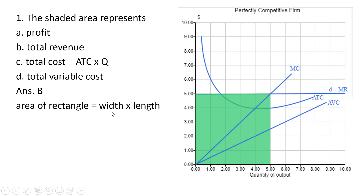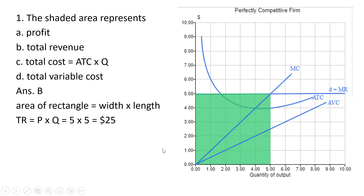The area of a rectangle is given by width times length. The width here is five dollars, which is the price, and the length here is the quantity of units, which is five. So five times five would be twenty-five dollars of total revenue.